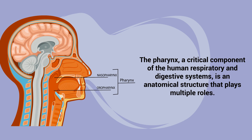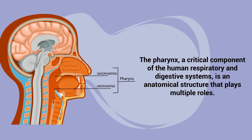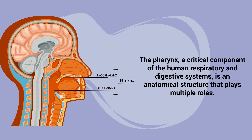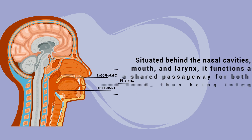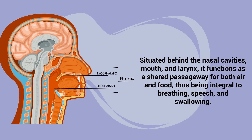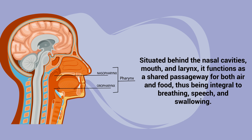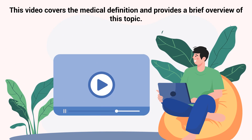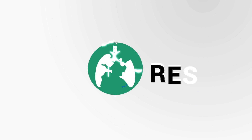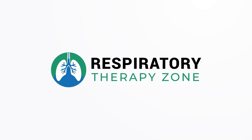The pharynx, a critical component of the human respiratory and digestive systems, is an anatomical structure that plays multiple roles. Situated behind the nasal cavities, mouth, and larynx, it functions as a shared passageway for both air and food, thus being integral to breathing, speech, and swallowing. This video covers the medical definition and provides a brief overview of this topic.